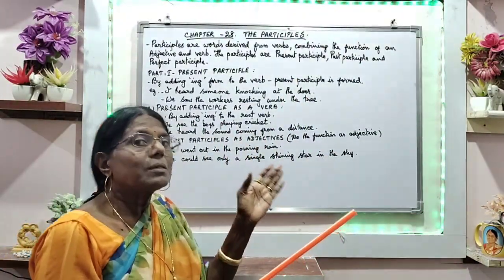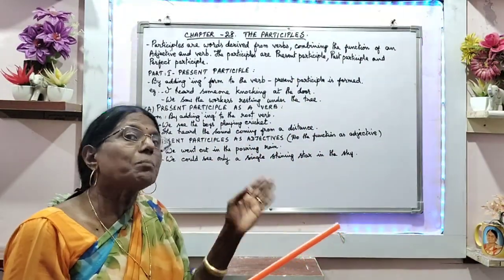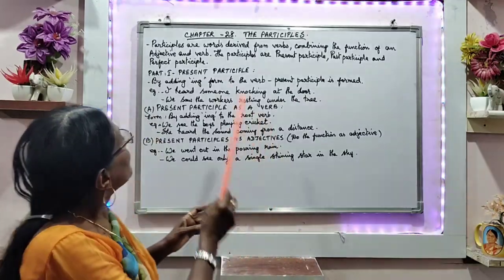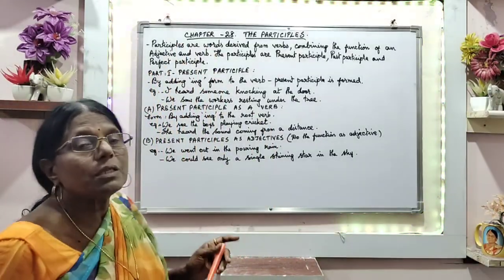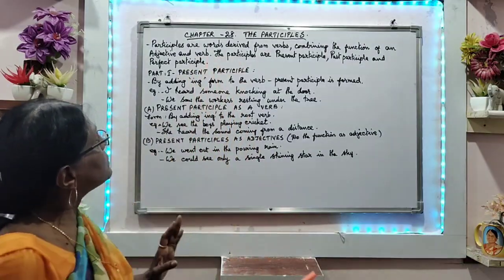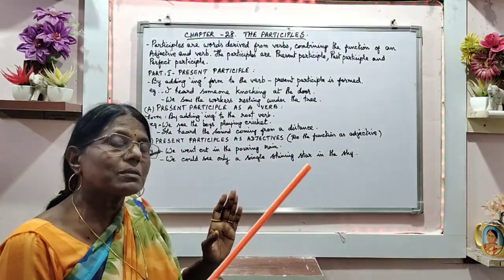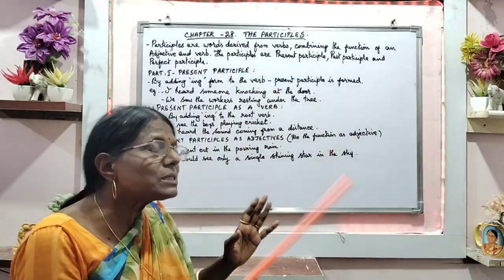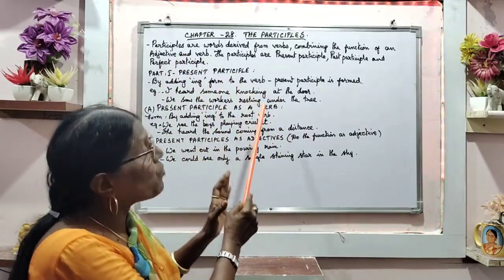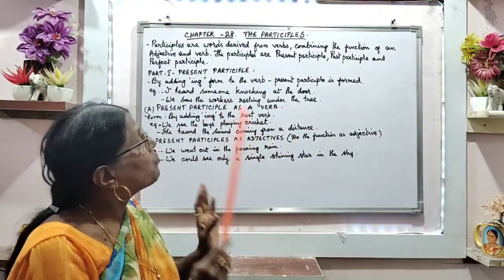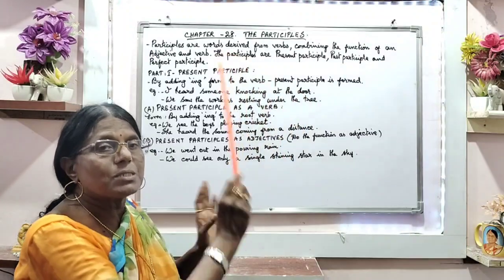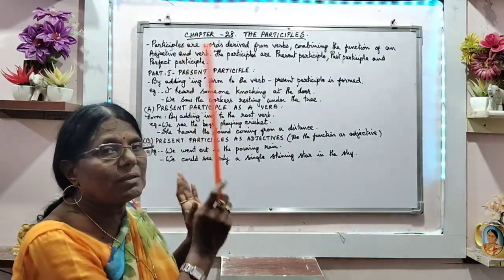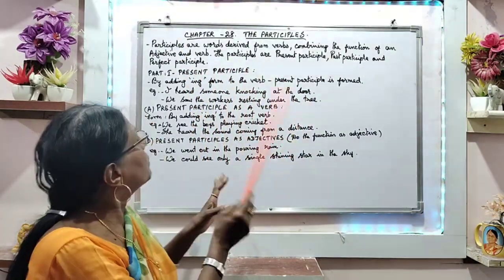Present participles, past participles, and perfect participles. First, let us take the present participle. In the present participle, how is it formed? By adding ing form to the verb, it is formed. Present participle is formed in that way, by adding ing to the verb.